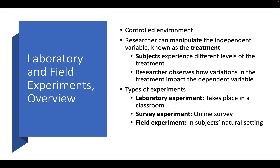As an overview, experiments take place in a controlled environment. The researcher can manipulate the independent variable, which is known as the treatment. Subjects are grouped into different groups and experience different levels of the treatment. In some cases, the subjects experience no treatment at all. This allows the researcher to observe how variations in the treatment affect the dependent variable.